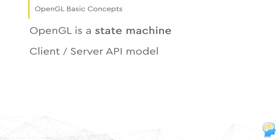OpenGL follows the client-server model. To prepare everything for drawing, we set up the OpenGL state by calling the API functions. We ask OpenGL to take the input data and render the output to actual pixels on a screen, or in a frame buffer in OpenGL terms.